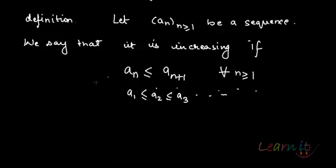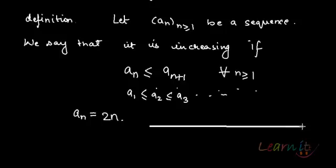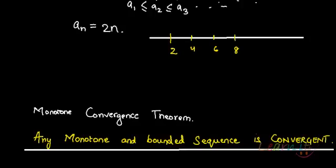An example of an increasing sequence would be a_n = 2n. Whatever the value of n, we get terms of this sort on a line: starting off with 2, then 4, then 6, then 8, and so on — the even natural numbers. That is what an increasing sequence looks like.